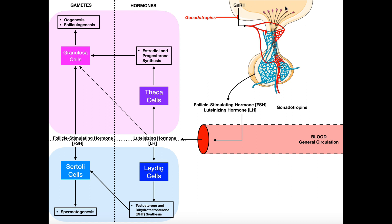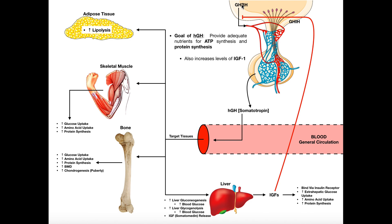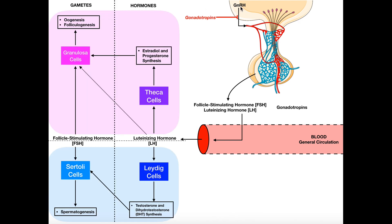We start up here with the hypothalamus, which generates a hormone called gonadotropin-releasing hormone. Make sure you pay attention to how this is written — it's GnRH. If you're not careful, you might mistake this for growth hormone-releasing hormone. GnRH is released into this network of blood vessels called the hypothalamic-hypophyseal portal system, which carries it down to the anterior pituitary gland.